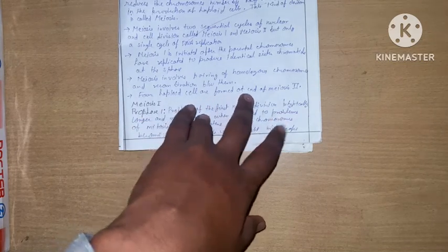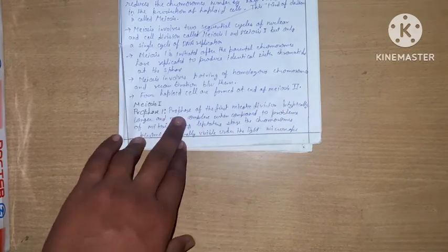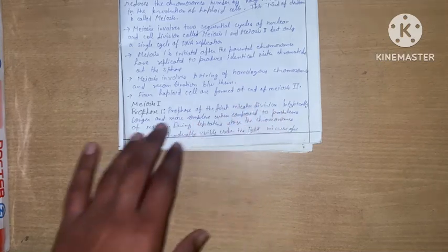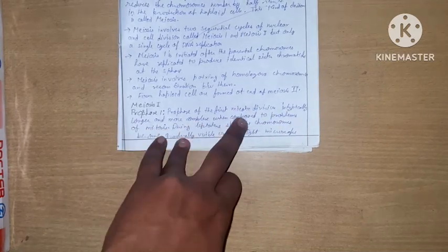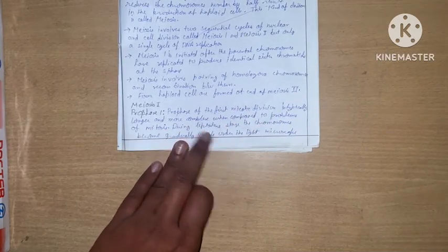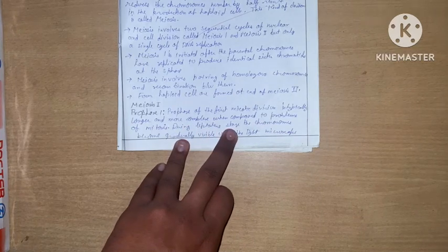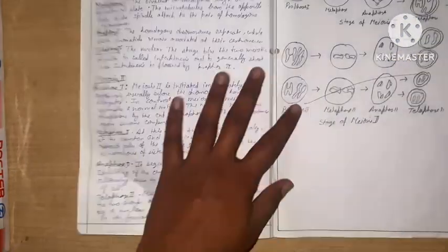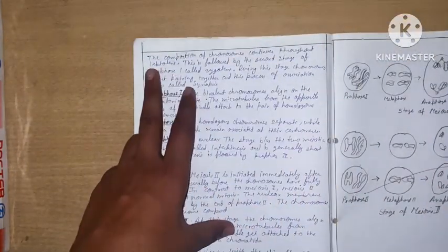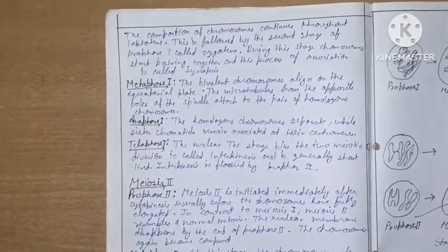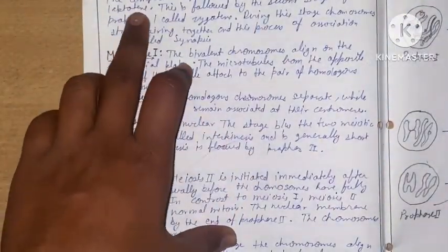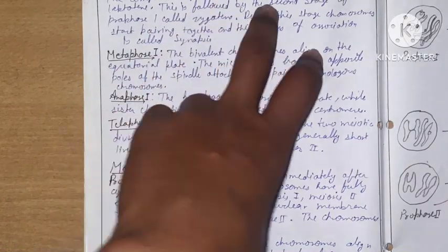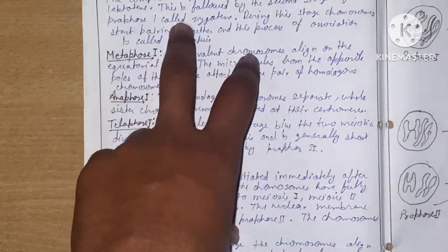Prophase I of the first meiotic division is typically longer and more complex than prophase of mitosis. During the leptotene stage, the chromosomes become visible under the light microscope. The compaction of the chromosomes continues throughout leptotene. This is followed by the zygotene stage, during which chromosomes start pairing together in an association called synapsis.